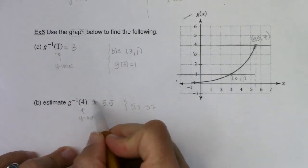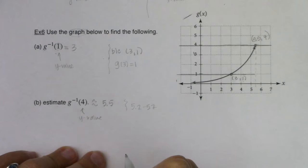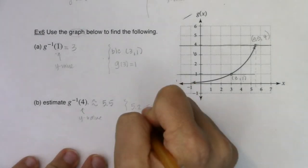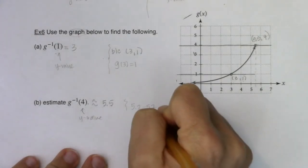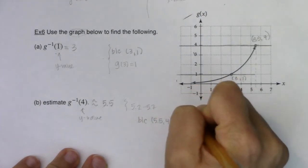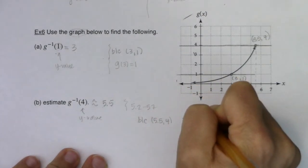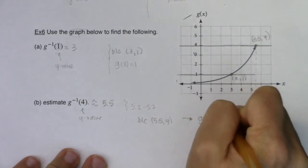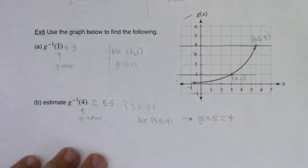When we estimate, we use a little squiggle sign instead of the equals. And again, this was all because of that ordered pair 5.5 comma 4. I could also have said that g of 5.5 was approximately 4.